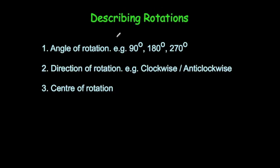In this video we're going to look at describing rotations. Whenever you're asked to describe a rotation, typically there's three things you need to do. First of all, identify the rotation and what angle has been rotated - so is it 90 degrees or 180 degrees. The direction - clockwise or anti-clockwise. And where the centre of rotation is, so where has the object been rotated about.